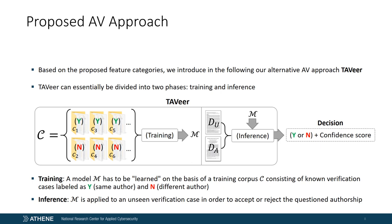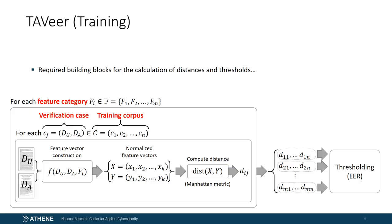Now that we've described the proposed feature categories, we can introduce our AV approach TAVeer, which is the abbreviation for topic-agnostic authorship verifier based on equal error rate. TAVeer can essentially be divided into two phases: training and inference. In the training phase, we must provide TAVeer a training corpus which comprises n verification cases labeled as yes and no, where yes denotes the same authorship and no a different authorship case. Once the training has been finished, the resulting model is applied in the inference stage to an unseen verification case. The result of the inference phase is a binary decision, yes or no, as well as a score that describes how confident TAVeer was with respect to its decision.